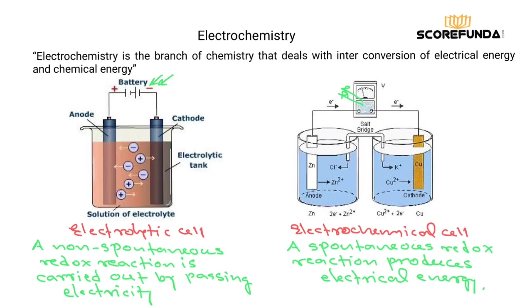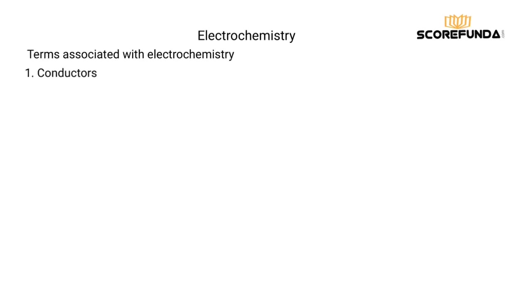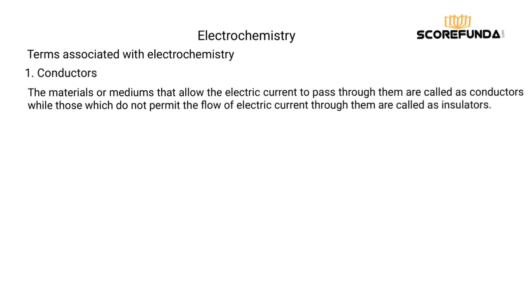Now let's look at the terms associated with electrochemistry. Conductors are defined as materials or mediums that allow electric current to pass through them. Similarly, materials which do not permit the flow of electric current through them are called insulators.